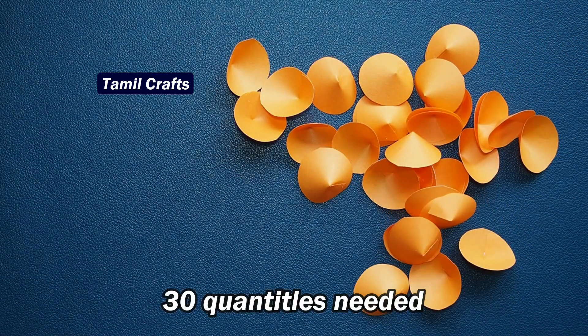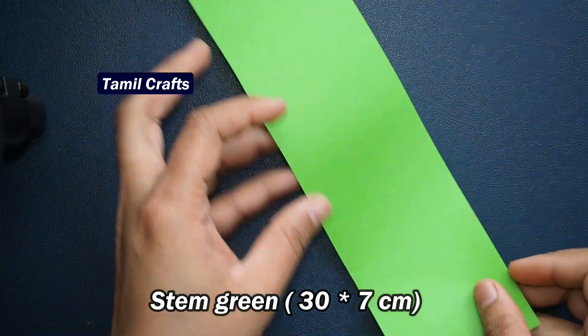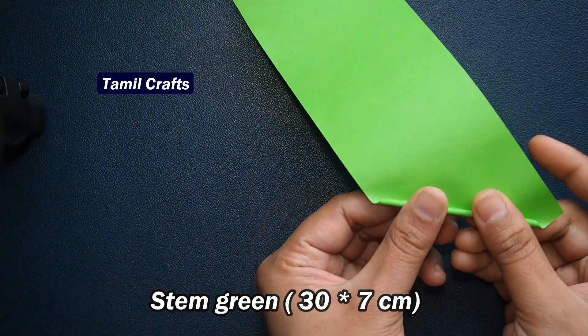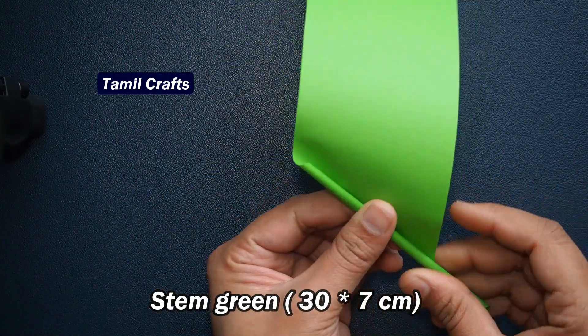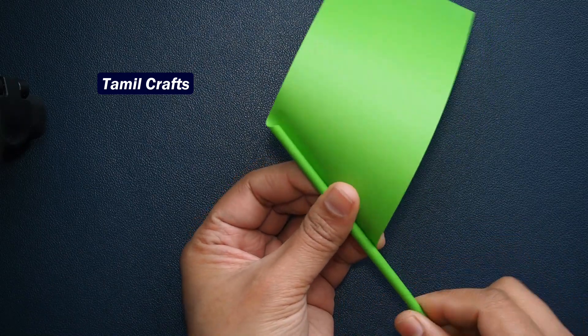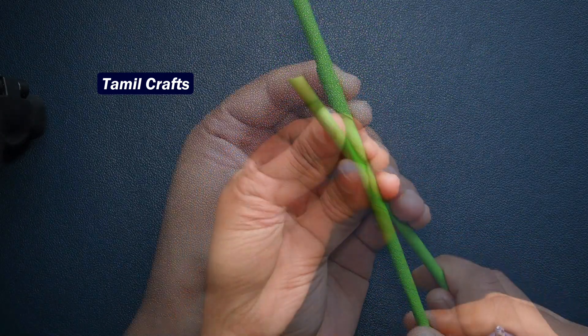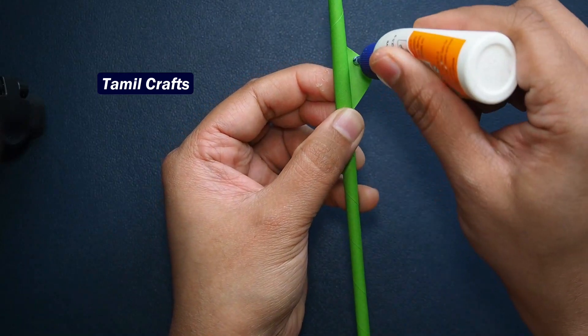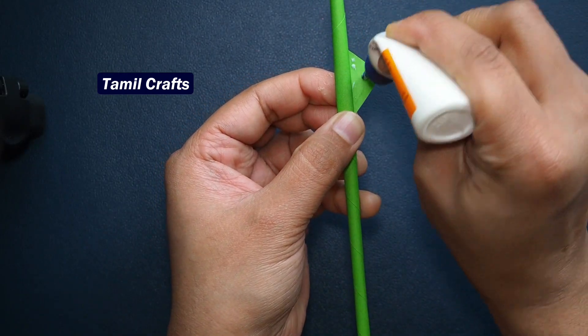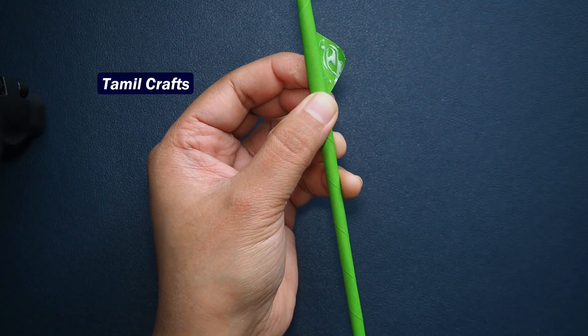Add a green color paper, 30cm by 7cm, and roll it like this. If you can't roll it easily, you can use a stick or a pencil. Apply glue to secure it.